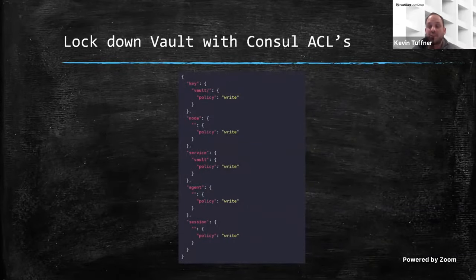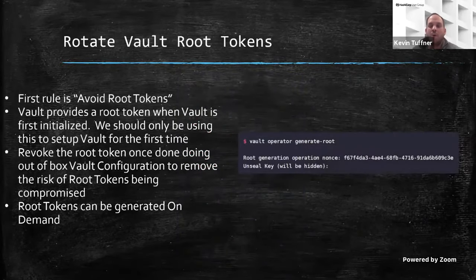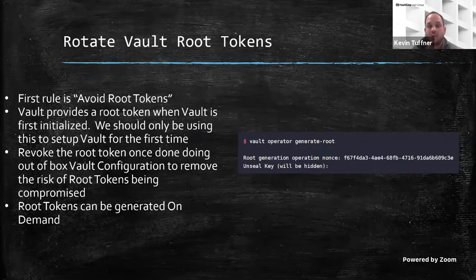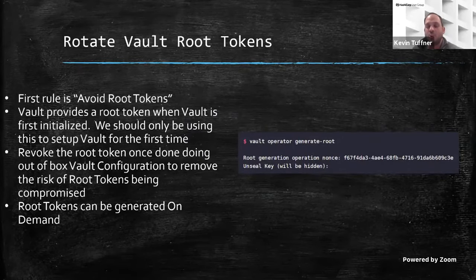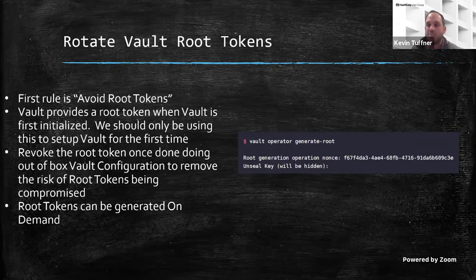If you're using Consul as a backend, it's important to lock down the Vault-specific access using Consul ACLs, so people aren't gaining access they shouldn't from an overall security surface perspective. Rotate your root tokens — the first rule is to avoid them. Use them as a one-time thing just to get a Vault server up and running, then either rotate it or just revoke it. You can usually generate it on the fly when you need it. You don't want to always be leveraging the root token or passing it out to everybody within the organization — this enlarges the risk surface since the root token has a lot of permissions behind the scenes.